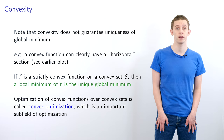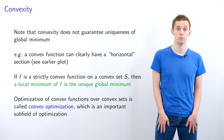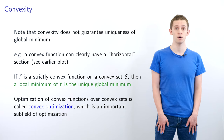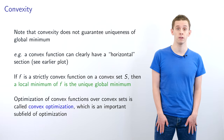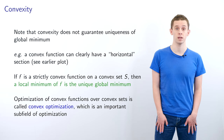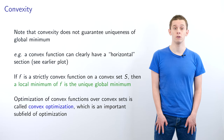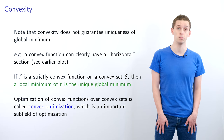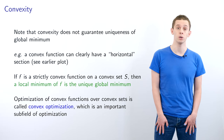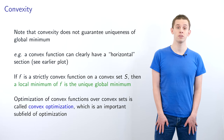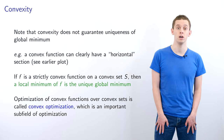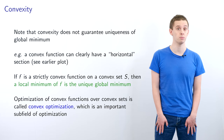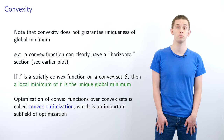It's worth noting that convexity does not guarantee the uniqueness of a global minimum — in particular, a convex function can have a horizontal section where all function values are the same, similar to the piecewise linear example. However, if f is strictly convex on a convex set s, then a local minimum of f will be the unique global minimum. Optimization of convex functions over convex sets is referred to as convex optimization, which is an important subfield of optimization.